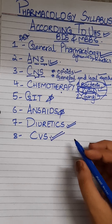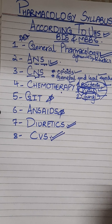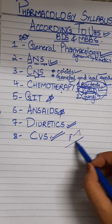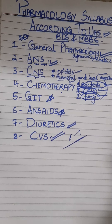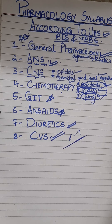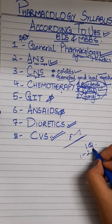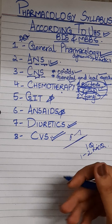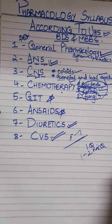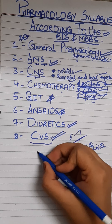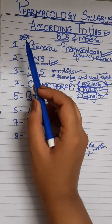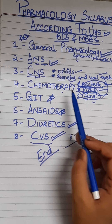Then comes diuretics, which is also very important. But CVS, according to a BDS student, is not really that important — it covers almost six to seven chapters but has little relevance. Only about one SAQ and one to two MCQs come from all those CVS chapters. You should have a basic idea of CVS, but do it at the end.